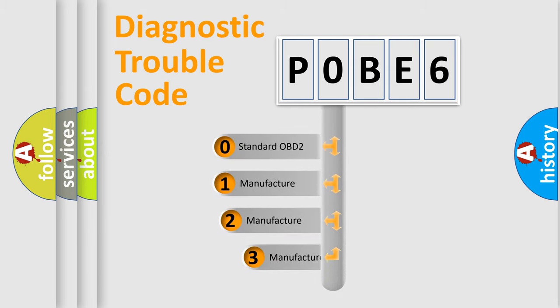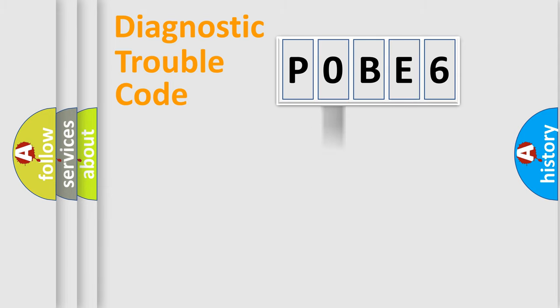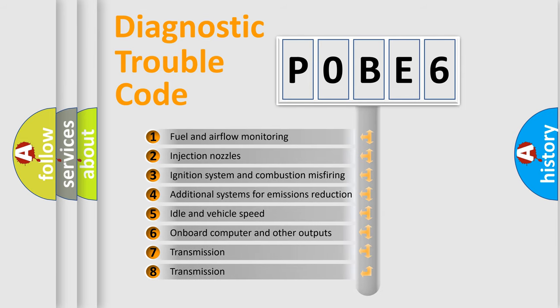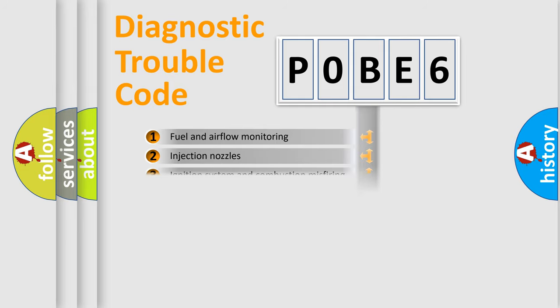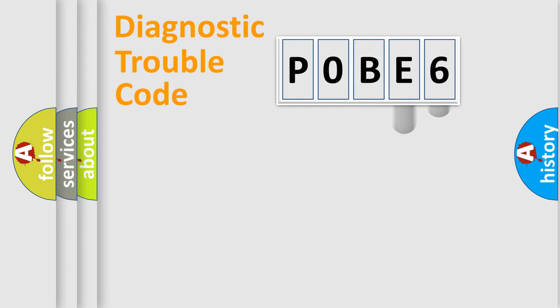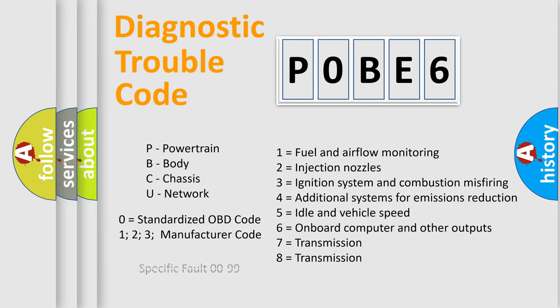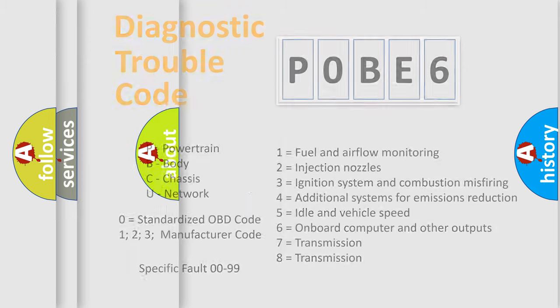If the second character is expressed as zero, it is a standardized error. In the case of numbers 1, 2, or 3, it is a more specific expression of a car-specific error. The third character specifies a subset of errors. This distribution is valid only for the standardized DTC code, and only the last two characters define the specific fault of the group. This division is valid only if the second character is expressed by the number zero.